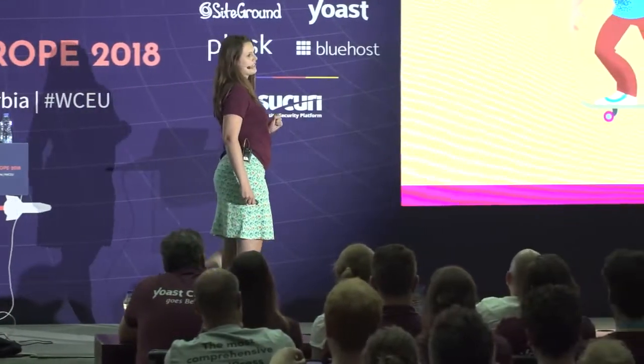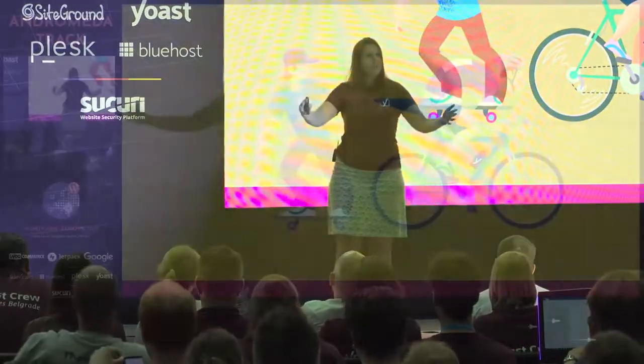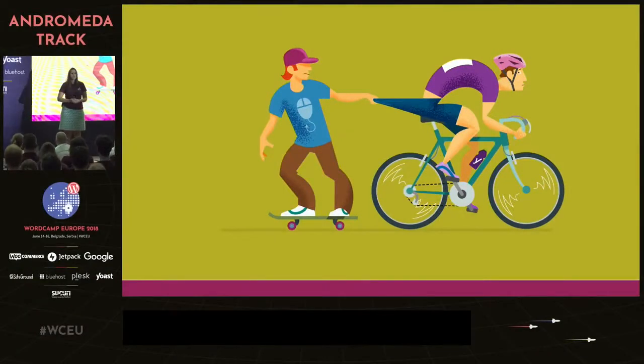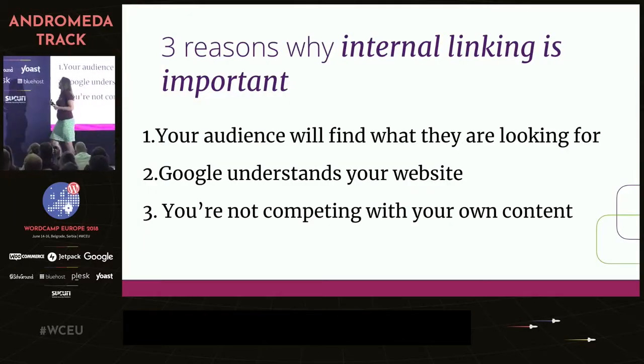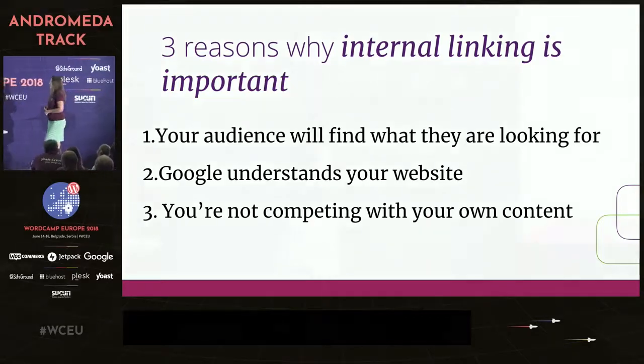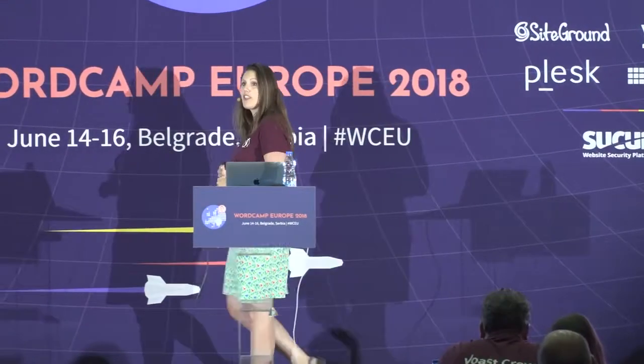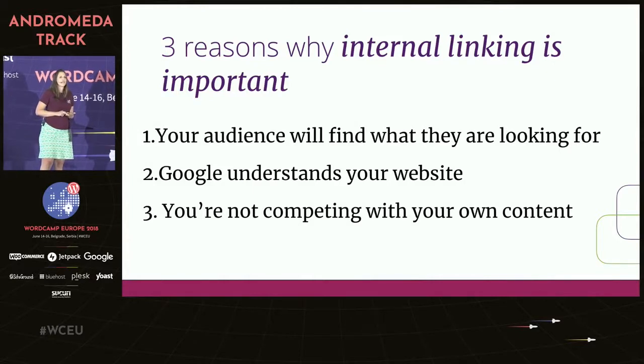There's another reason why internal linking is important, and that also has to do with Google. On your website, you're probably writing about similar topics. At Yoast, we tend to write a lot about SEO. If we don't tell Google which of our articles is most important, we'd actually be competing with our own blog posts for a higher ranking. You can solve that with a good internal linking structure. So: it helps your audience find what they're looking for, it helps Google understand your website, and it stops you from competing with your own content.